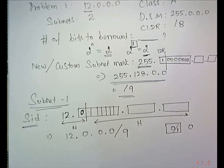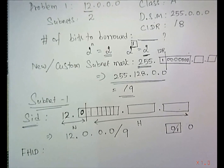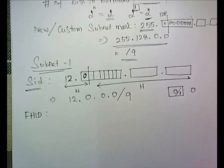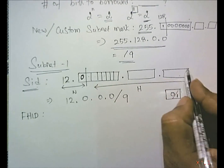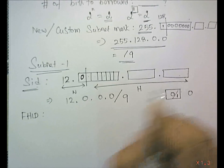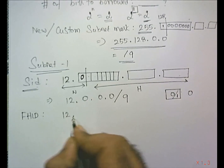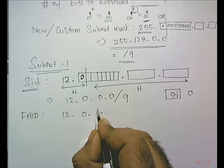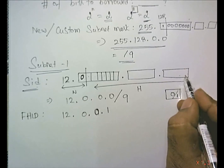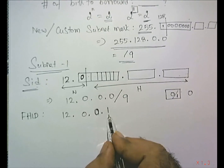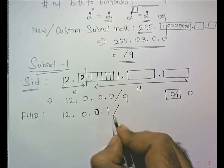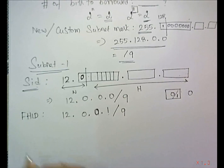For the first host ID, the formula is: make all host bits 0 except the last bit, which is set to 1. Since 2 to the power of 0 equals 1, the result is 12.0.0.1/9. This is the first host ID.